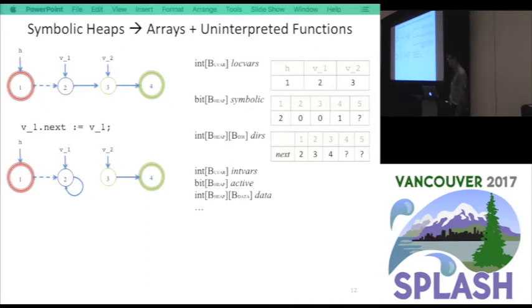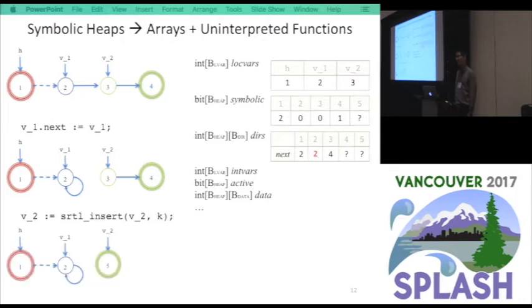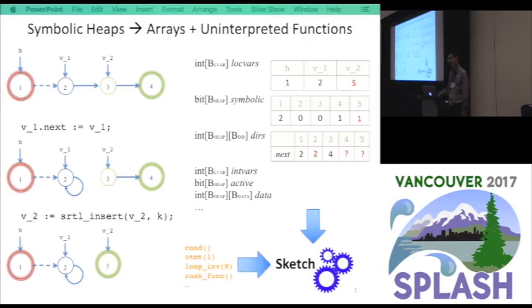If we have an update to the next field of V1, the heap got updated, we can represent the update on the heap on arrays. So the next field of two got updated. And we can also simulate the function calls. If there's a function call to V2, we just have a portion of the heap reachable from V2, and replace them with a fresh new symbolic node, 5, and incorporate the postcondition for the function call, and we can update the arrays appropriately. So everything can be simulated on the arrays, and we encode this array representation into Sketch, and we also encoded a lot of synthesis enabling constraints, the constructs of the language into Sketch so that we can get the solution automatically synthesized.